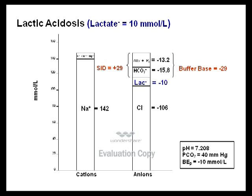In lactic acidosis, if plasma lactate is elevated to 10 mmol/L, this introduces 10 negative charges into the plasma compartment, algebraically titrating the strong ion difference from 39 to 29, forcing the buffer base to contract to negative 29. This is no different than a hyperchloremia of 116. The result is pH 7.208, pCO2 40, and a base deficit of 10 mmol/L. Correction consists of removal of lactate from the system.